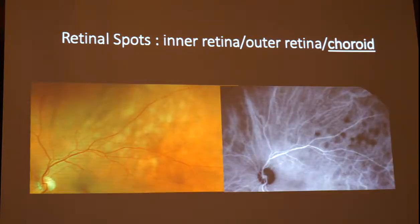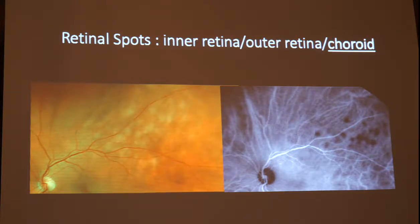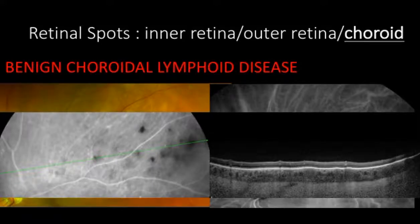Some inflammation may be associated with choroidal involvement. This is another case of a patient presenting with yellow deep retinal-choroidal spots that were hypofluorescent on ICG, resembling MEWDS. However, the OCT helped by showing diffuse choroidal thickening with hyporeflective lesions in the choroid, leading to the diagnosis of benign choroidal lymphoid disease — a benign proliferation of lymphoid tissue belonging to the spectrum of choroidal lymphoma.